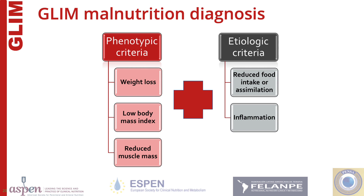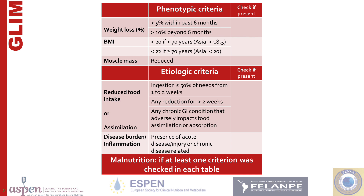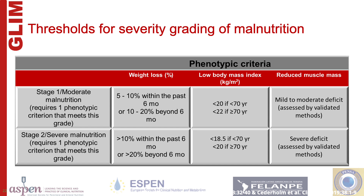Putting together the phenotypic and etiologic criteria, GLIM can be used to categorize a patient as malnourished. It is important to note that in practice, all five of these indicators should be assessed, but the occurrence of only two — one phenotype and one etiology — is needed for categorizing a patient as malnourished. The framework has been provided here in the form of a checklist to indicate how GLIM should be used. Phenotypic criteria are used to determine the severity of the malnutrition. The second row in this table shows the cut points that can be used for weight loss, low BMI, and reduced muscle mass.